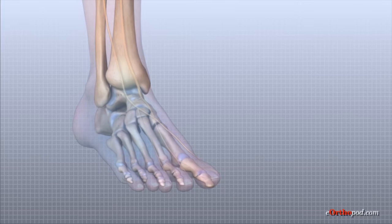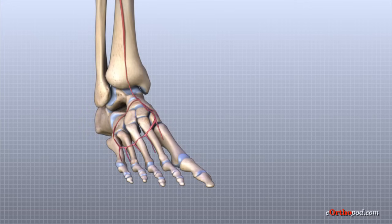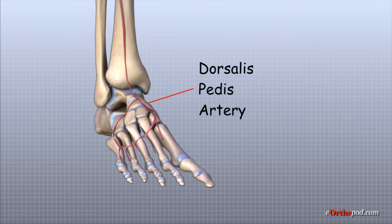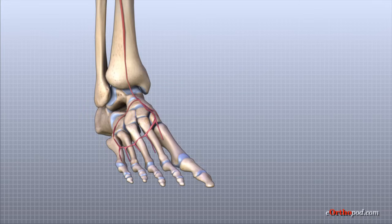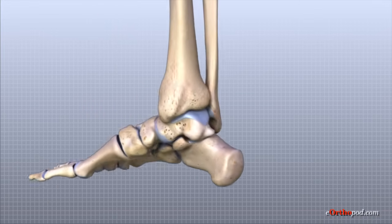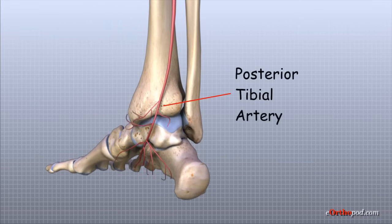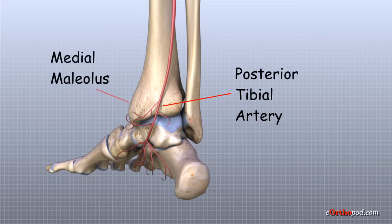The ankle gets blood supply from nearby arteries that pass by the ankle on their way to the foot. There are two main arteries that cross the ankle. The dorsalis pedis artery runs in front of the ankle to the top of the foot — you can feel the pulse where this artery runs in the middle of the top of the foot. Another large artery, called the posterior tibial artery, runs behind the medial malleolus and sends smaller blood vessels to the inside edge of the ankle joint. You can feel the pulse where this artery runs behind the medial malleolus.